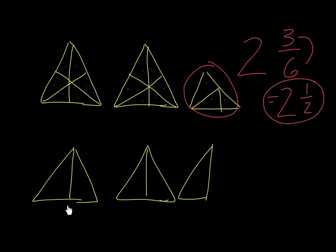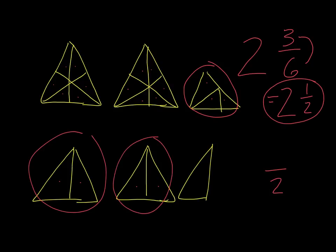Looking at our last question: it looks pretty simple. We've got 2 complete triangles and a piece. Each triangle has 1, 2 pieces, so the denominator is 2. We have 2 complete triangles, and 1 piece left over — so our final answer is another 2 and 1 half. I hope that's been helpful for you. Good luck.